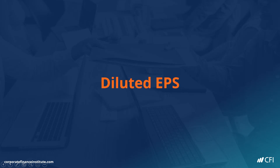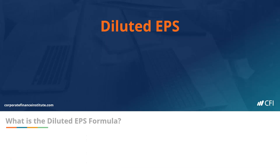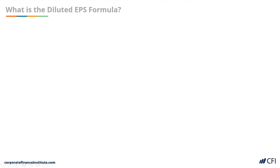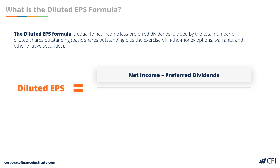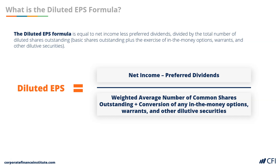Diluted earnings per share. The diluted earnings per share formula is equal to net income, less preferred dividends, divided by the total number of diluted shares outstanding, which is basic shares outstanding plus the exercise of in-the-money options, warrants, and other dilutive securities.